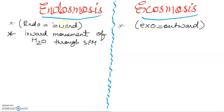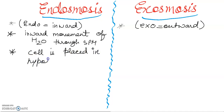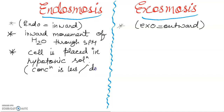When we place a cell in a hypotonic condition — cell is placed in a hypotonic solution. Hypotonic solution का मतलब है जहाँ concentration less हो, यानी dilute solution होगा। In endosmosis, the inward movement of water occurs when the cell is in a hypotonic solution.